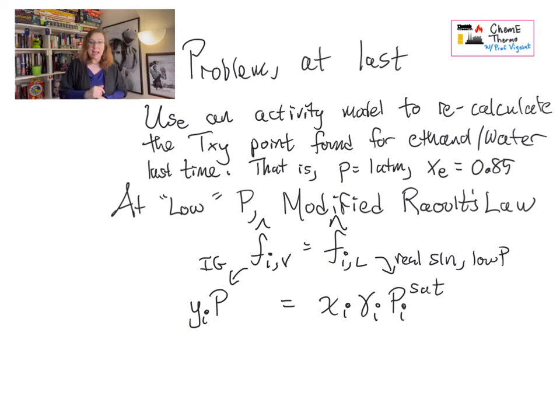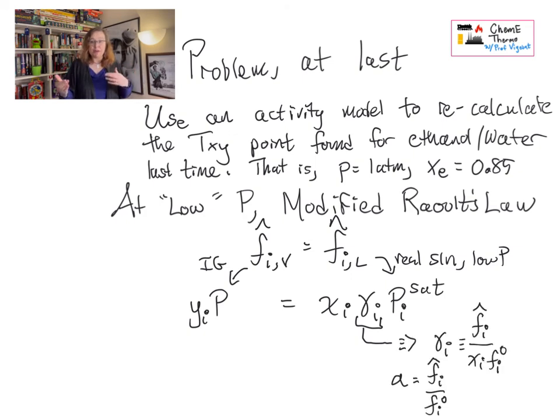So our change is it's Xi times gamma i Pi sat. And the gamma i is what's called the activity coefficient. It captures the way in which our solution differs from an ideal solution. And I put a couple of definitions in here for you. So gamma i is the ratio of the fugacity of the stuff in the mixture to how it behaves as a pure component with mole fraction down there on the bottom.